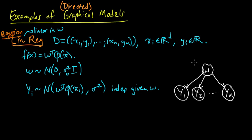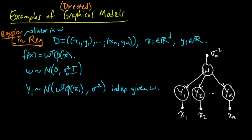In this video we're also going to introduce notation and terminology associated with graphical models. One notational convention is to put a little dot for parameters. So w depends on the σ₀² parameter. Also, each y_i depends on its corresponding x_i, and we denote that with a dot — a little dot instead of a circle — for something which is non-random, a non-random parameter.